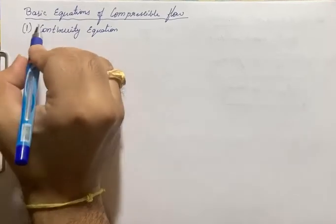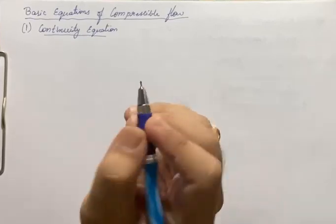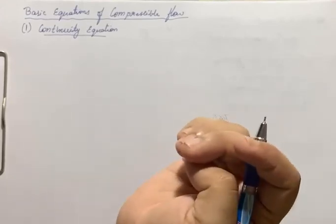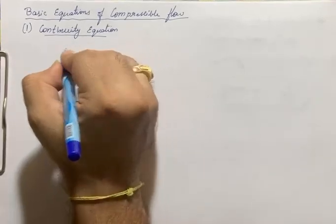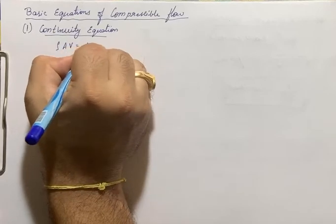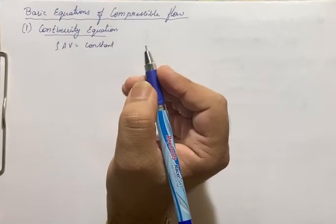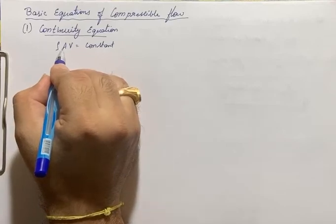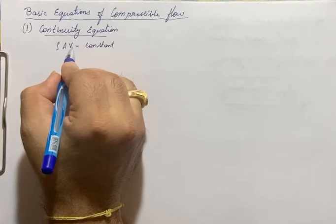Now, coming to the continuity equation — what is the continuity equation? It is based on the law of conservation of mass, in which matter cannot be created nor destroyed, but only transferred from one place to another. That means mass flow rate: ρAv equals constant, where ρ is the density of the fluid, A is the cross-sectional area, and v is the velocity at that cross section.